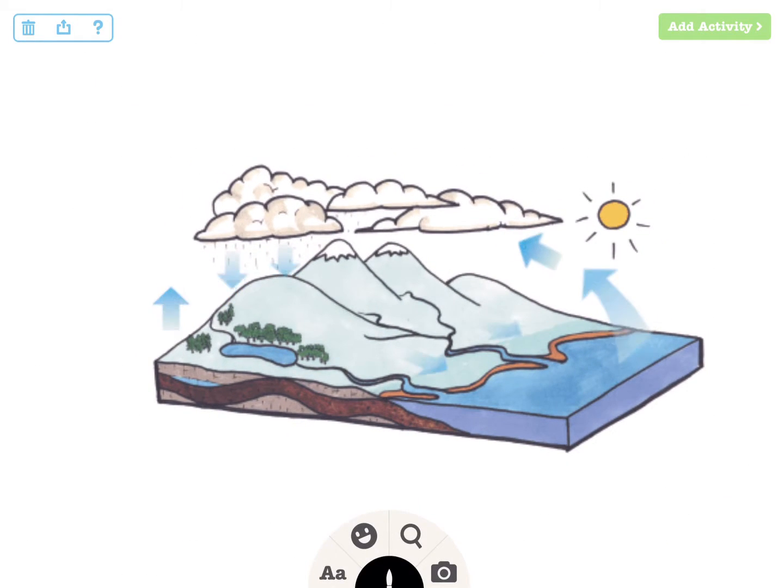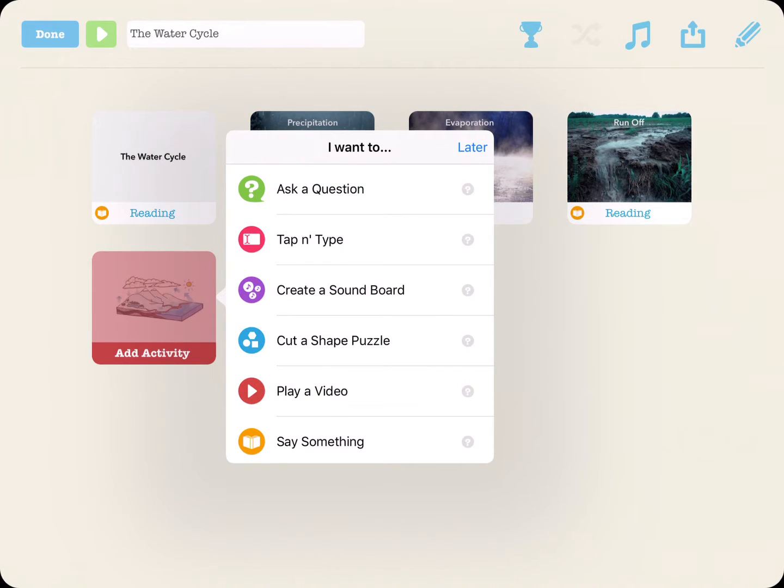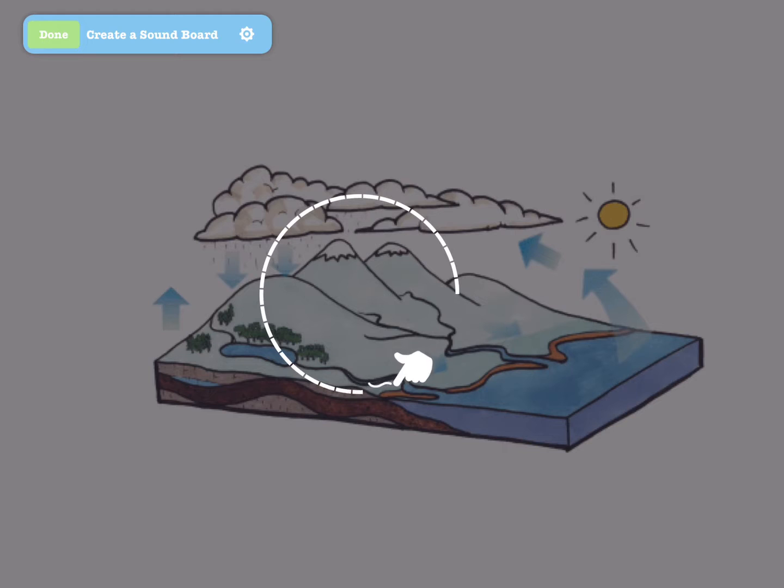When your slide is complete, tap Add Activity and Next to add your sounds. Select Soundboard from the menu of Interactive Layers. Outline the soundboard hotspots by tracing them with your finger or stylus.